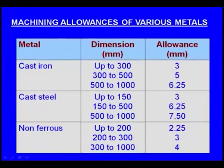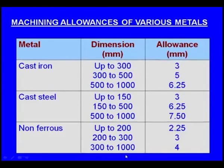From 300 to 1000 mm the machining allowance is 4 mm. Remember, this extra increment must be given to the pattern dimension so that after machining we get the required size of the casting.